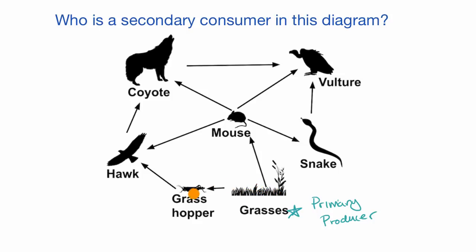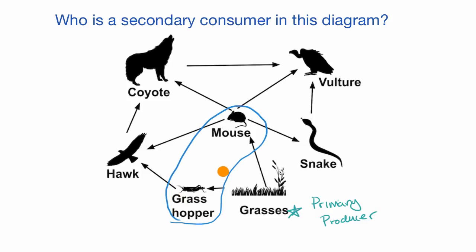The grasshopper and the mouse eat that grass for that energy. Since they directly eat that primary producer, the grasshopper and the mouse would be primary consumers.